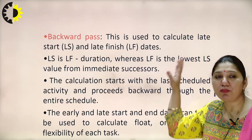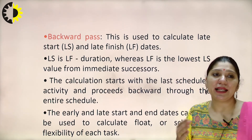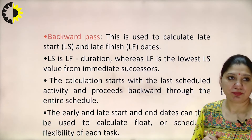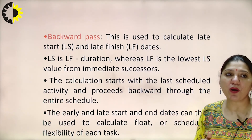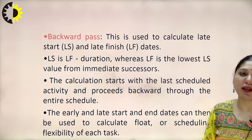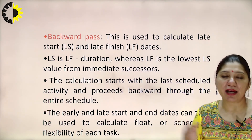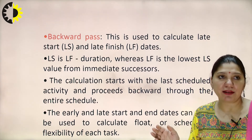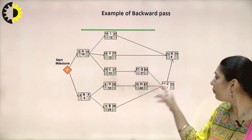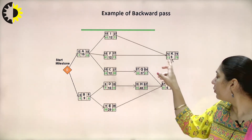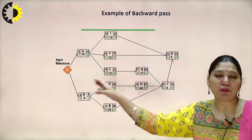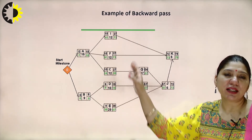Similarly, we have the backward pass, which calculates late start (LS) and late finish (LF) dates. LS equals LF minus duration, and LF is the lowest value from the immediate successor. Calculations start with the last scheduled activity and proceed backwards through the entire schedule. For example, 79 minus 6 equals 73; that 73 flows to the next activity, 73 minus 6 equals 67, continuing back to the start. The backward pass analysis checks for any lags in the project.